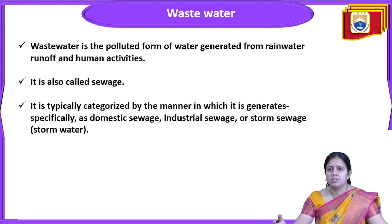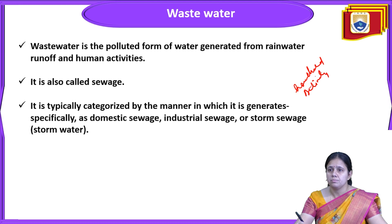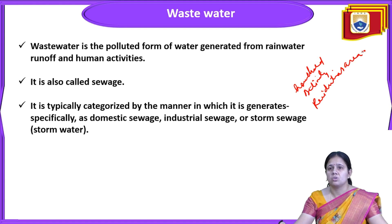First of all, we will start with wastewater treatment. What is wastewater and from where does this water come? Wastewater is a polluted form of water generated from rainwater runoff and human activities, including household activities and residential areas. This is called wastewater or sewage.